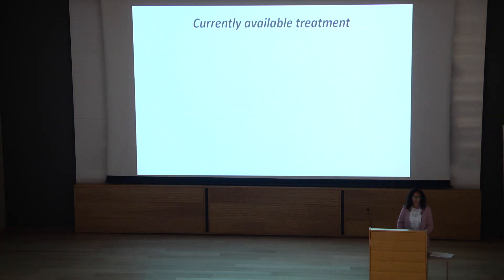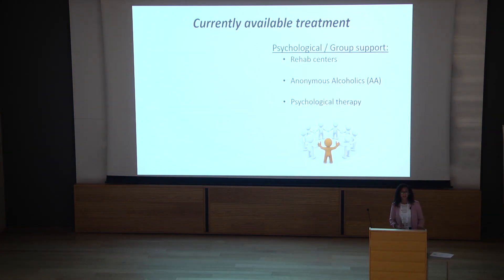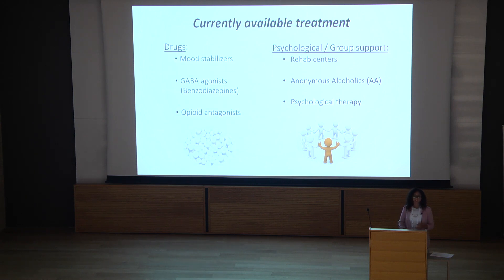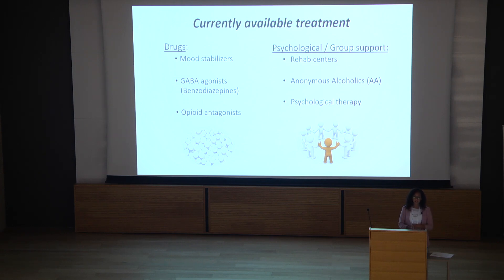How can we help these people? Currently available treatments include the famous AA groups, which try to help by providing support. Most of these patients are normal functioning people with families, but alcohol is their way of dealing with stress and negative life events. Psychological treatments target how they deal with these events, but sometimes it's not enough. A psychiatrist may prescribe GABA agonists to replace the alcohol, especially for very heavy drinkers — for example, someone who drinks a liter of vodka a day. But these medications are also very addictive, so it's an addictive way to get out of addiction and not a very good treatment.